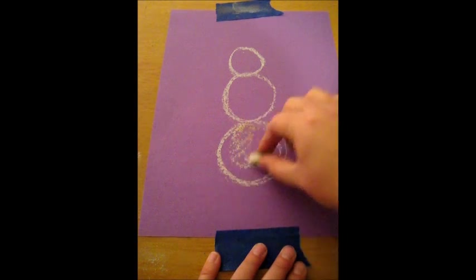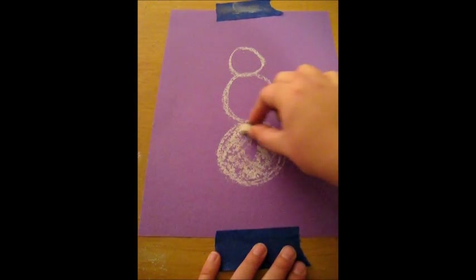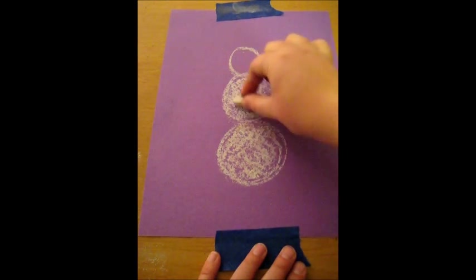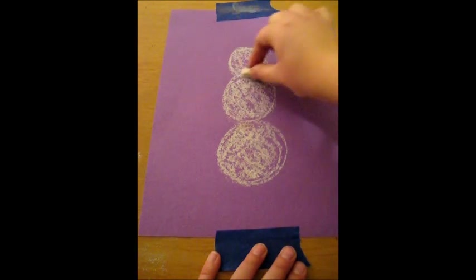Then I fill those in with the side of my chalk. Rather than the tip of my chalk, this will create less dust, and we'll fill it in eventually when we blend it in with our finger.